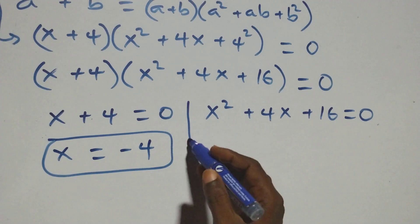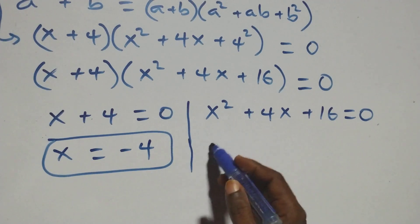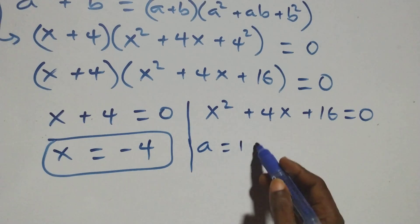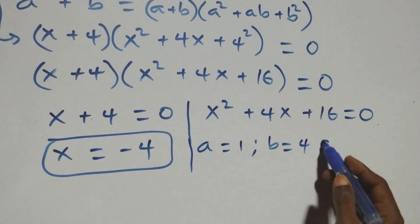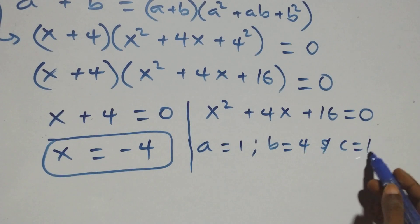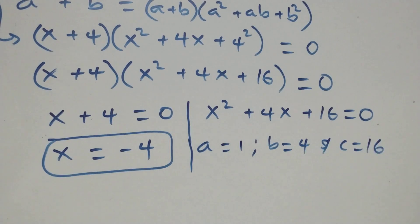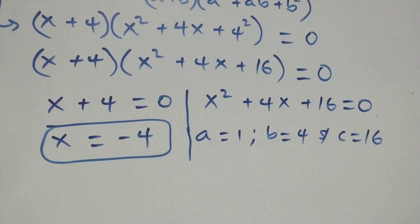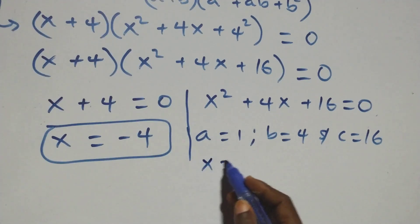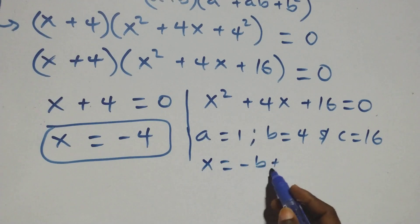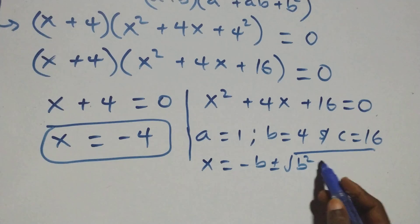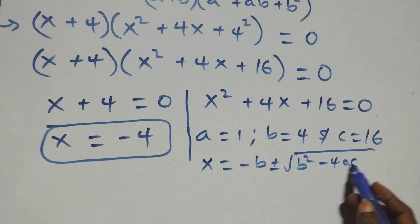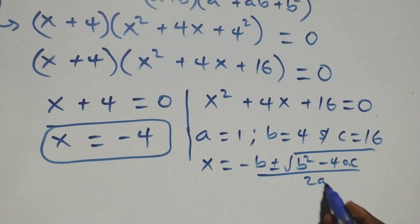Then here we have a quadratic equation where a equals to 1, b equals to 4, and c equals to 16. Applying the quadratic formula, which is x equals to minus b plus or minus square root of b squared minus 4ac over 2a.